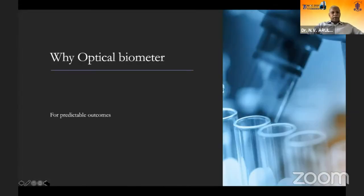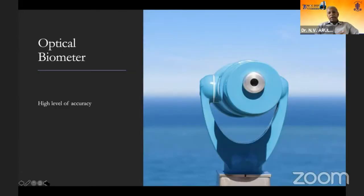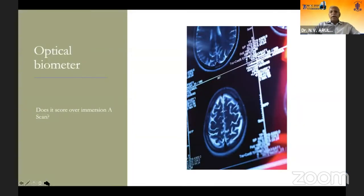What do we get from an optical biometer? High levels of accuracy — not just in axial length, but phenomenal accuracy in K values. Does it really score over axial length compared to immersion A-scan? Not really — a well-done immersion A-scan is as good as an optical biometer for axial length. Where it does score is in delegation: a proper A-scan must be done by a highly trained individual — an ophthalmologist or optometrist. While an optical biometer can almost be delegated to anyone and you can get excellent results.